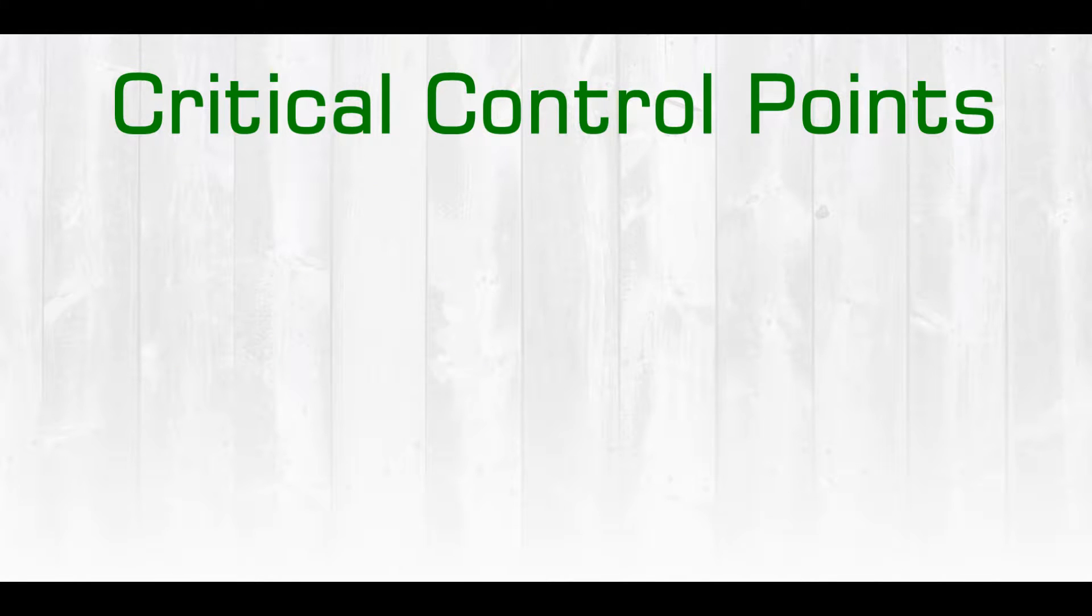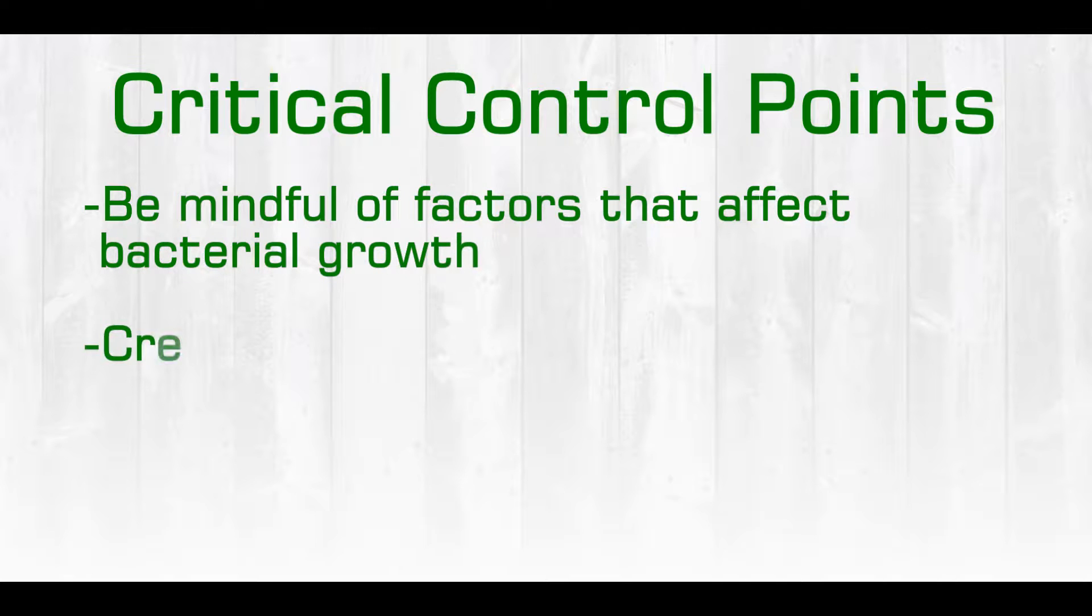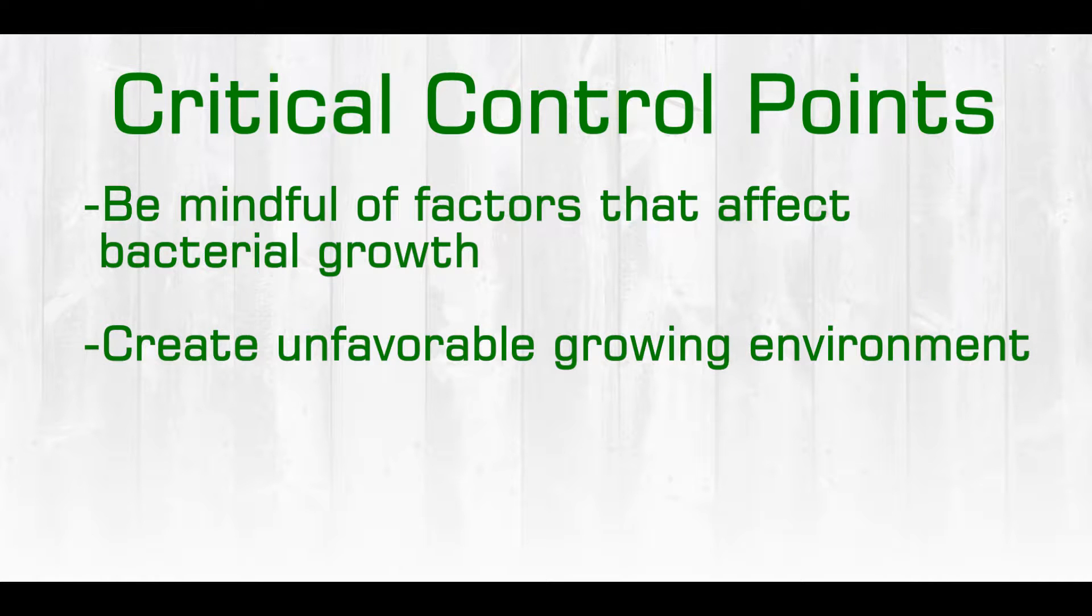When identifying critical control points, we need to keep in mind those factors that affect bacterial growth, as biological hazards are those that we are most concerned with in food products. We want to create an environment that is unfavorable for bacterial growth. So if we know the bacteria need certain things in order to grow, we can prevent their growth.